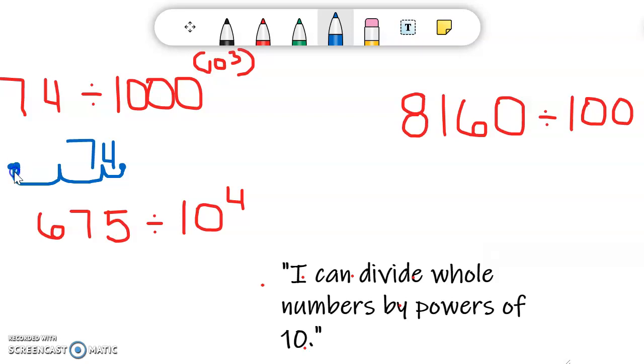So now my decimal point is right here. Now what I want to do is fill in a zero in the empty space and put an X over my old decimal point. So my product is 0.074.